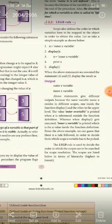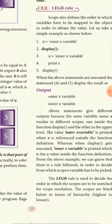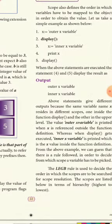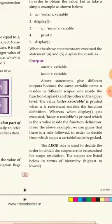And inner x variable. If you want output inner x variable, and outer x variable and inner x variable. You want to call the function. The above statements give different output because the same variable name x resides in different scopes, one inside the function display and the other in the upper level.